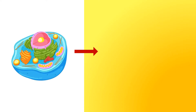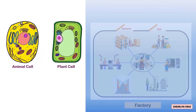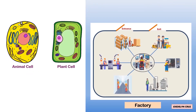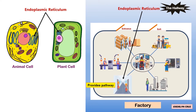In the cell as factory analogy, the hallway in the factory represents the endoplasmic reticulum. This hallway provides a pathway for the workers to transport the products to other rooms. The products are also produced in this hallway.